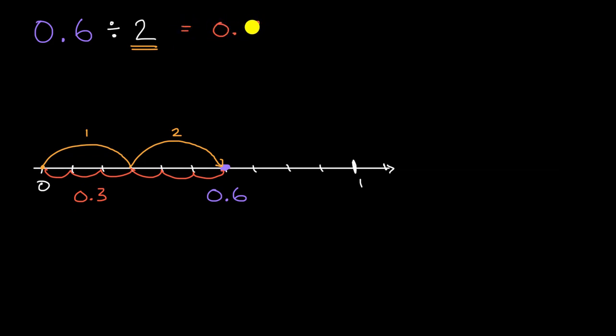And we've thought about it in other ways. If you have 6 of something, and you divide it by 2, you're going to have two groups of 3 of that something. So if you have 6 tenths, and you want to put it into two equal groups, well, each of those groups are going to be 3 tenths.